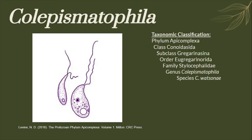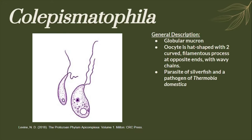Here is the taxonomic classification of the genus Colopys methophila. It has a globular mucron and the oocyte is hat-shaped with two curved filamentous processes at opposite ends with wavy chains. It is a parasite of silverfish and a pathogen of Thermobia domestica.